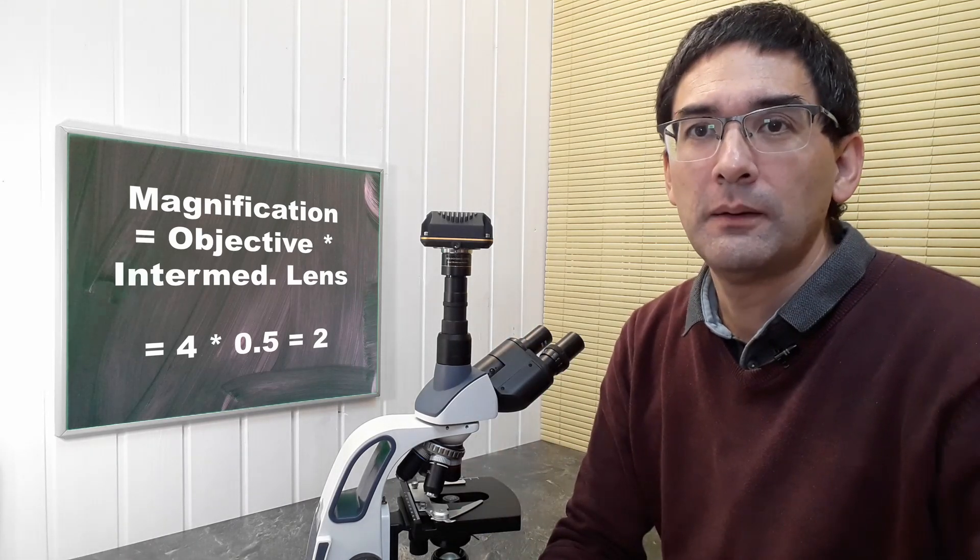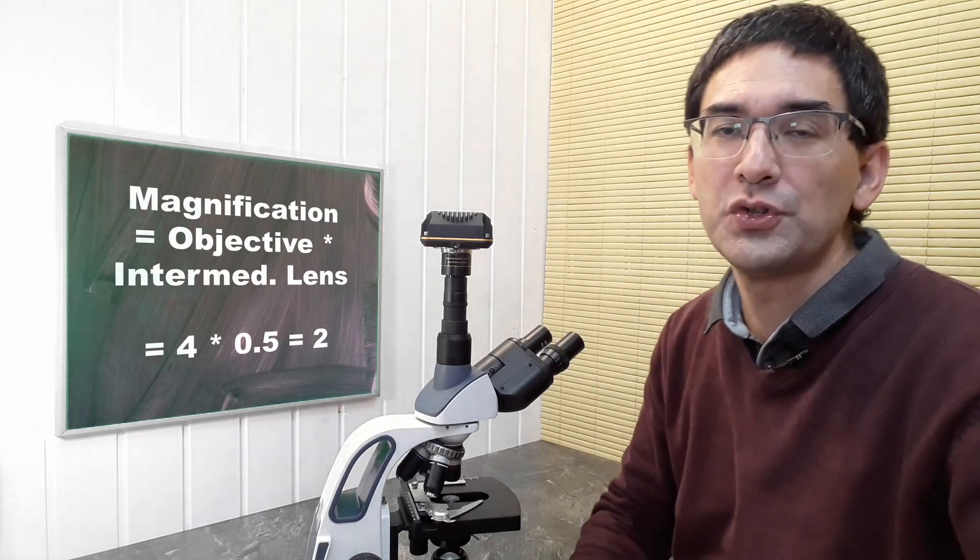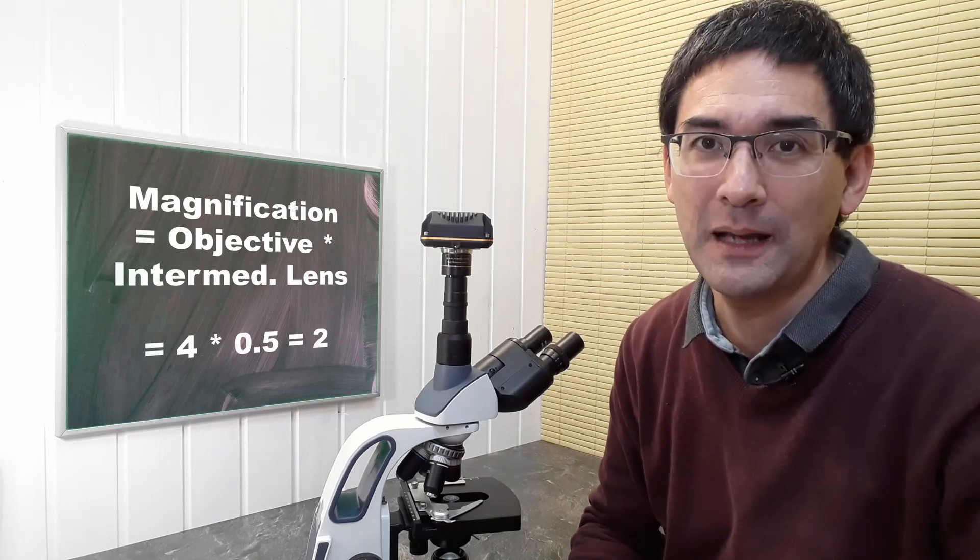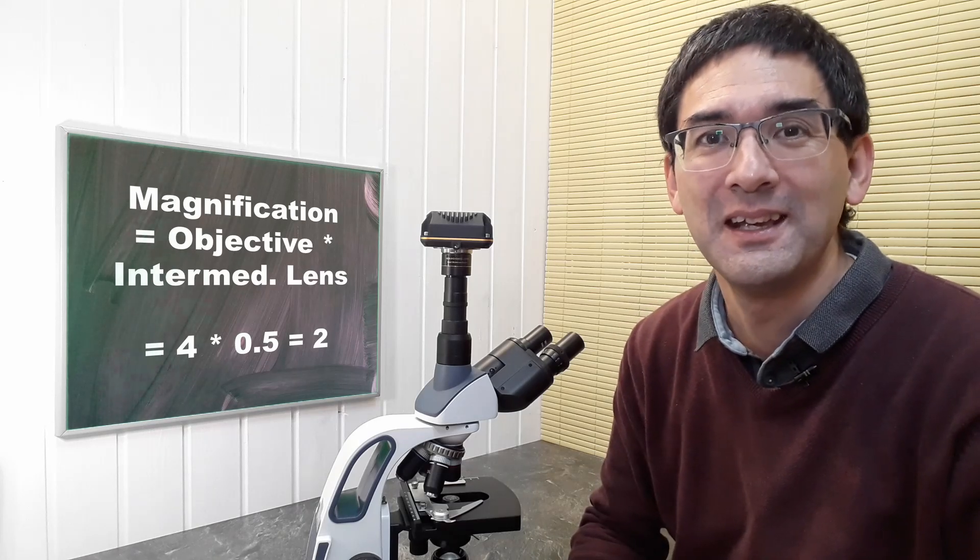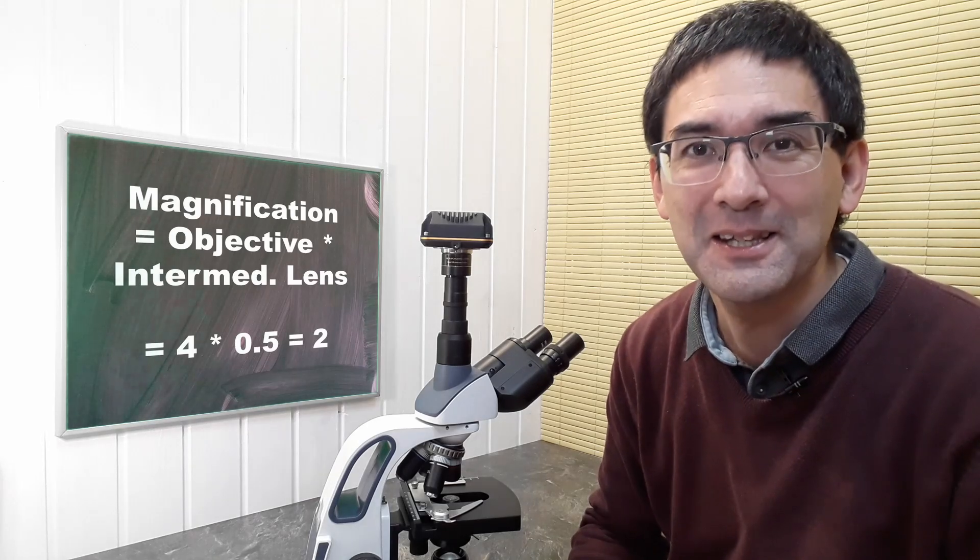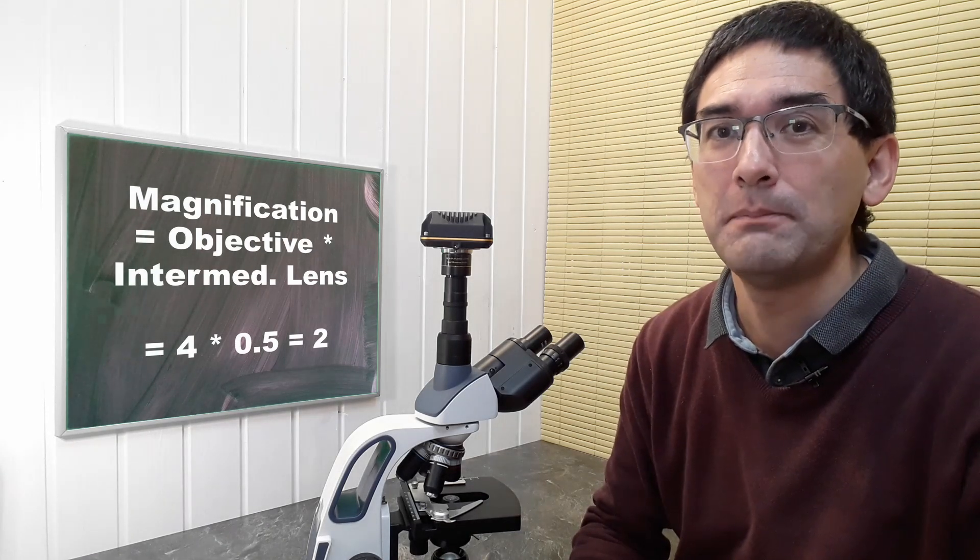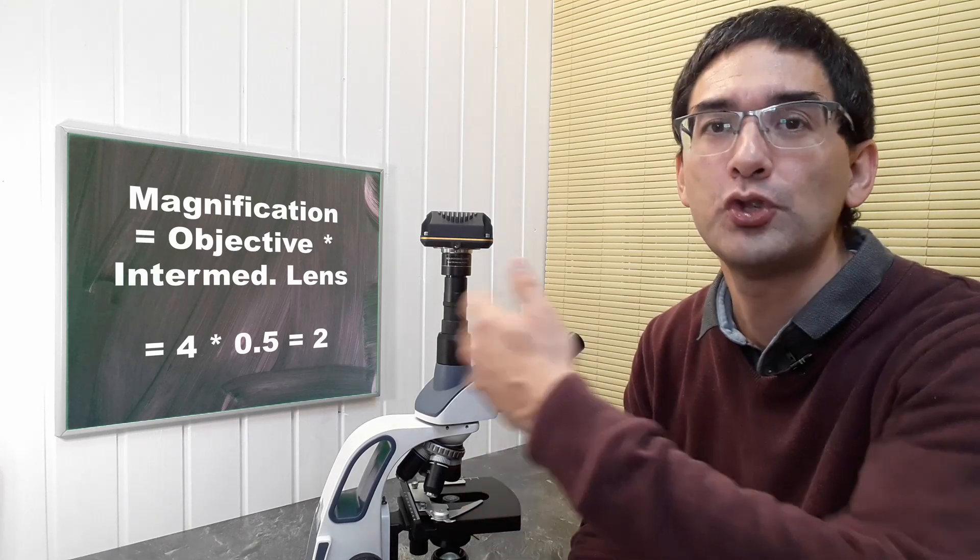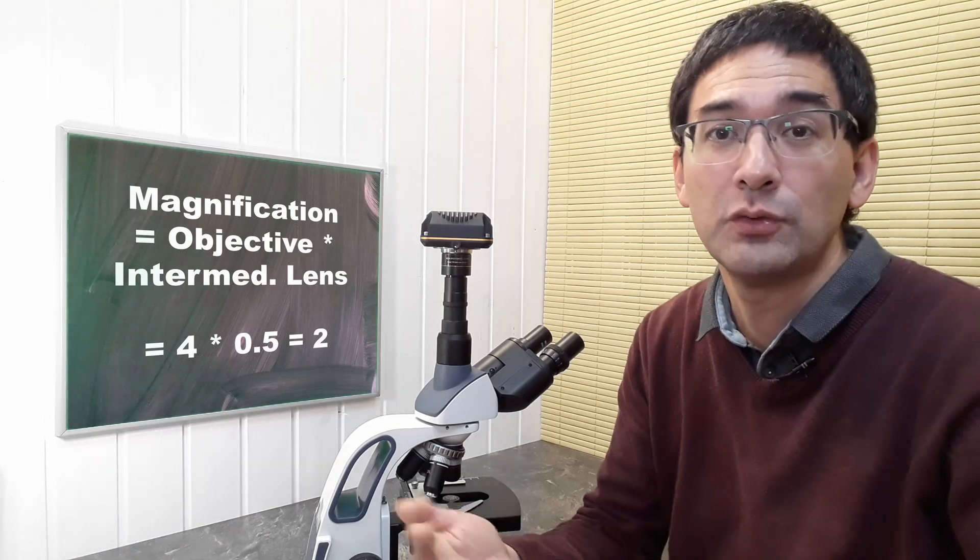If you connect a pocket camera in front, you also have to multiply the magnification of the pocket camera, but this is usually not well known, so it's imprecise. It's better to use a system where the image is directly projected onto the sensor because then you have more accurate data.